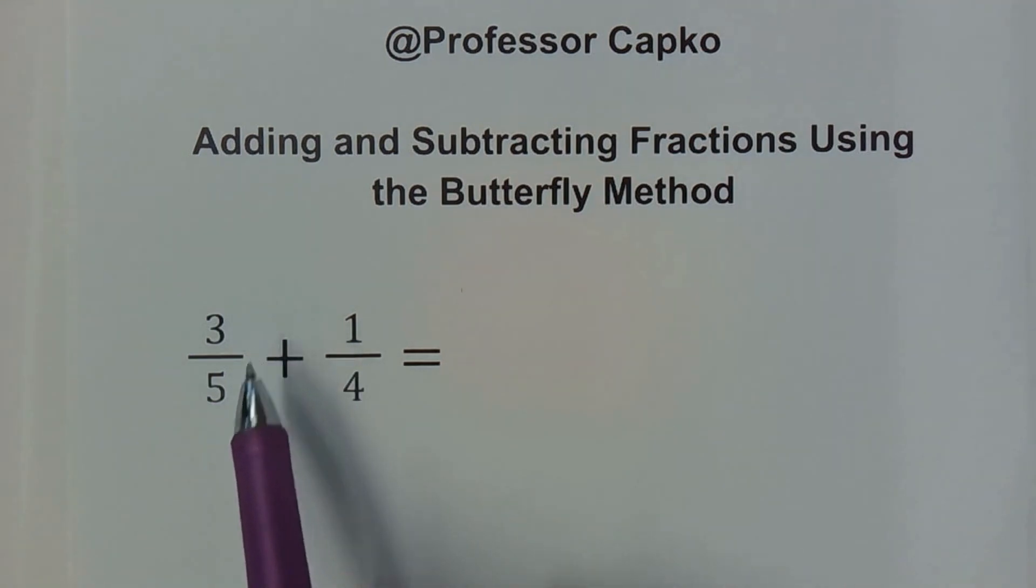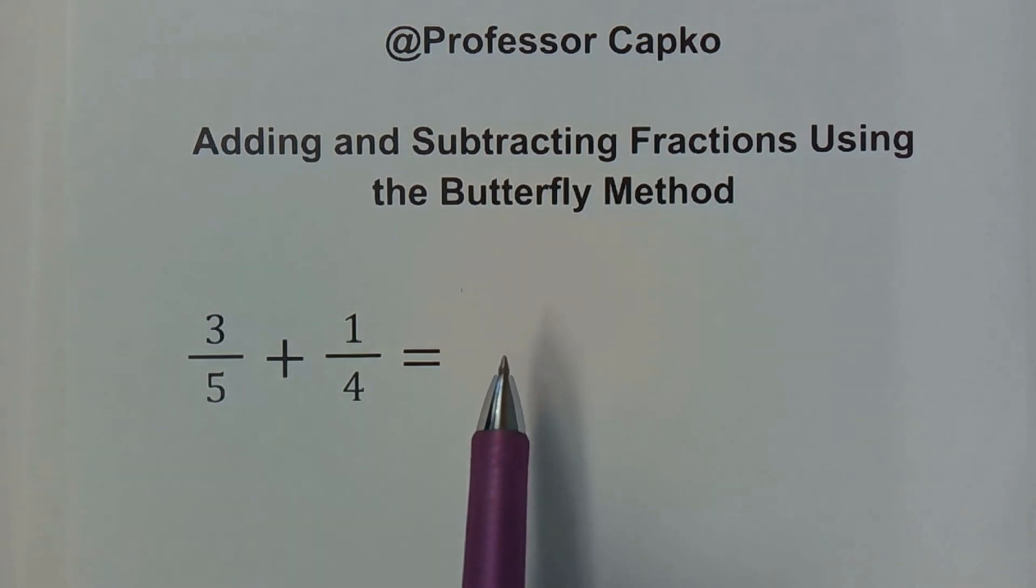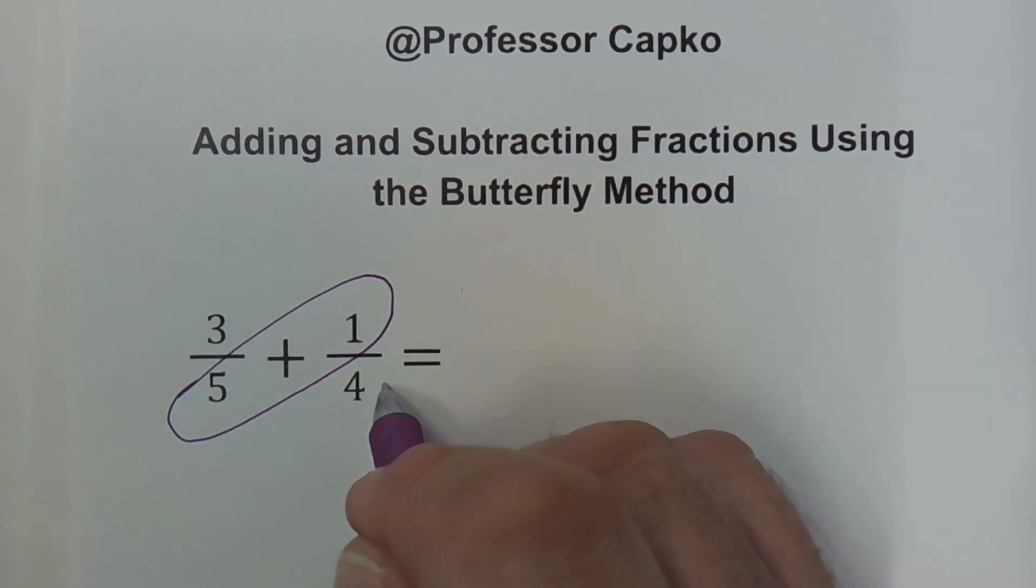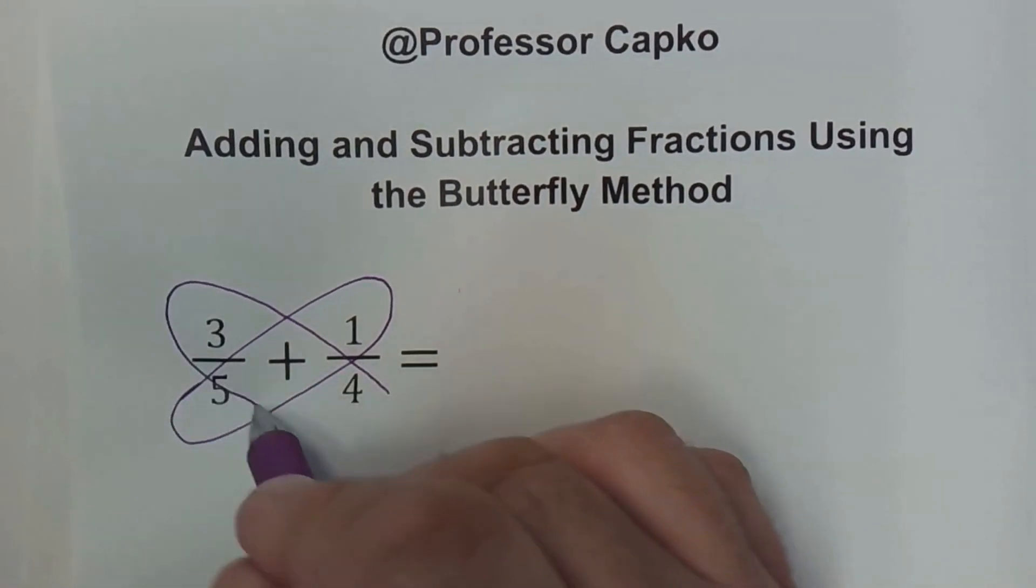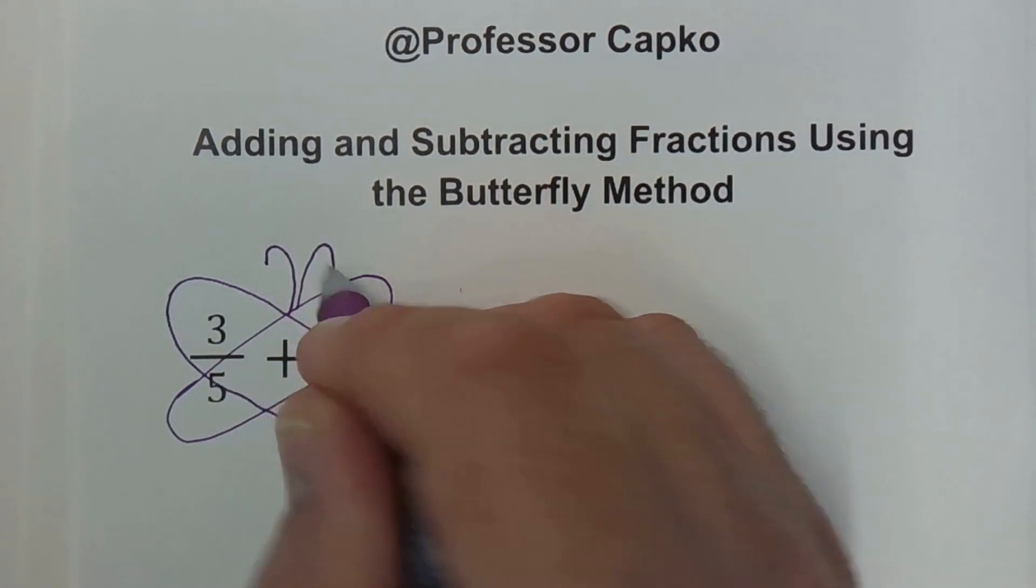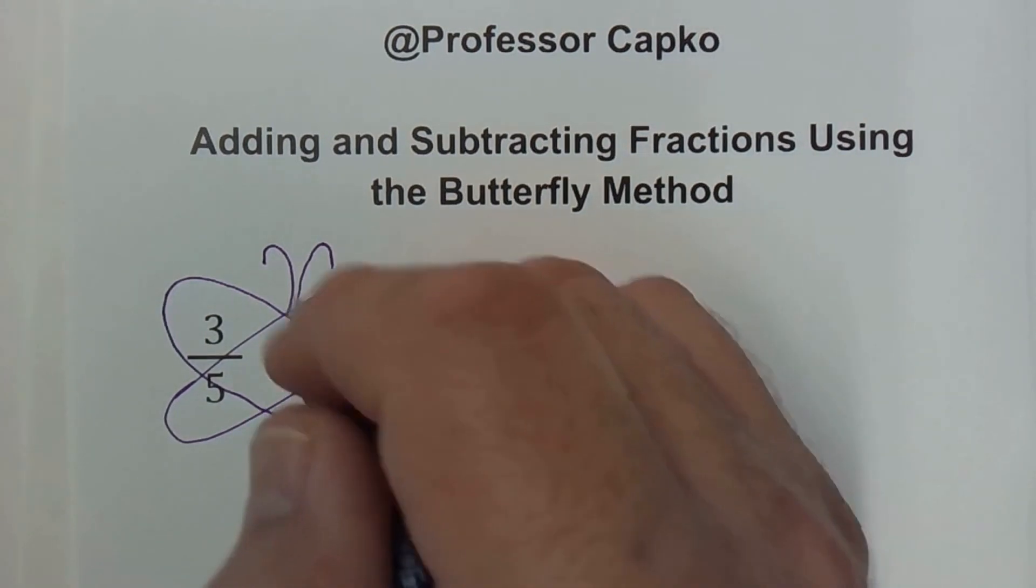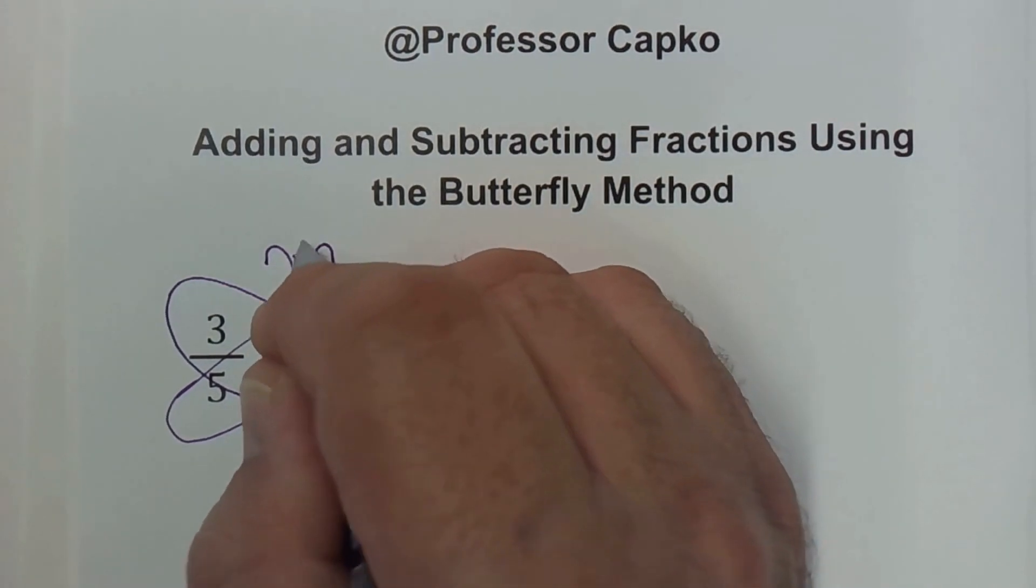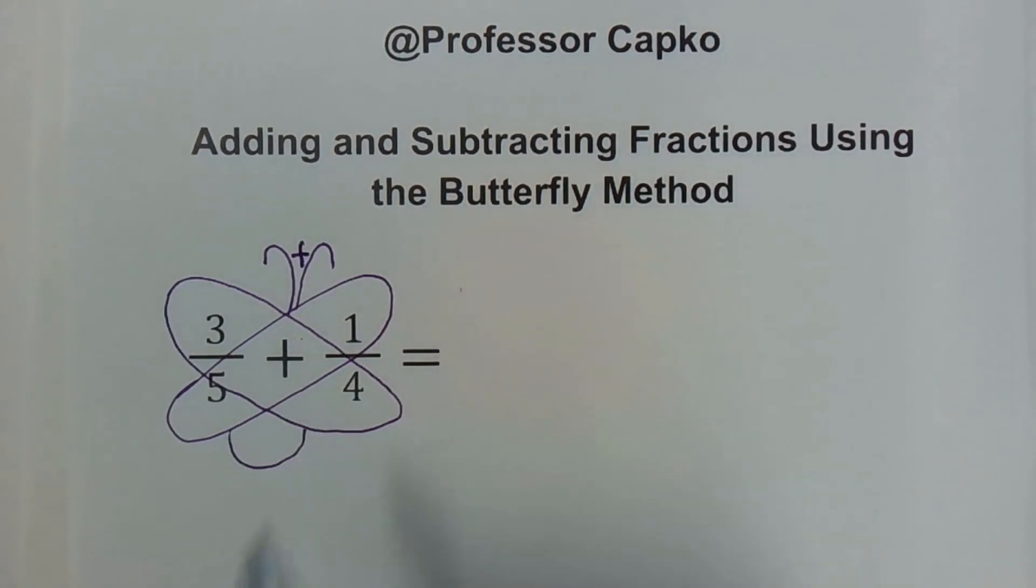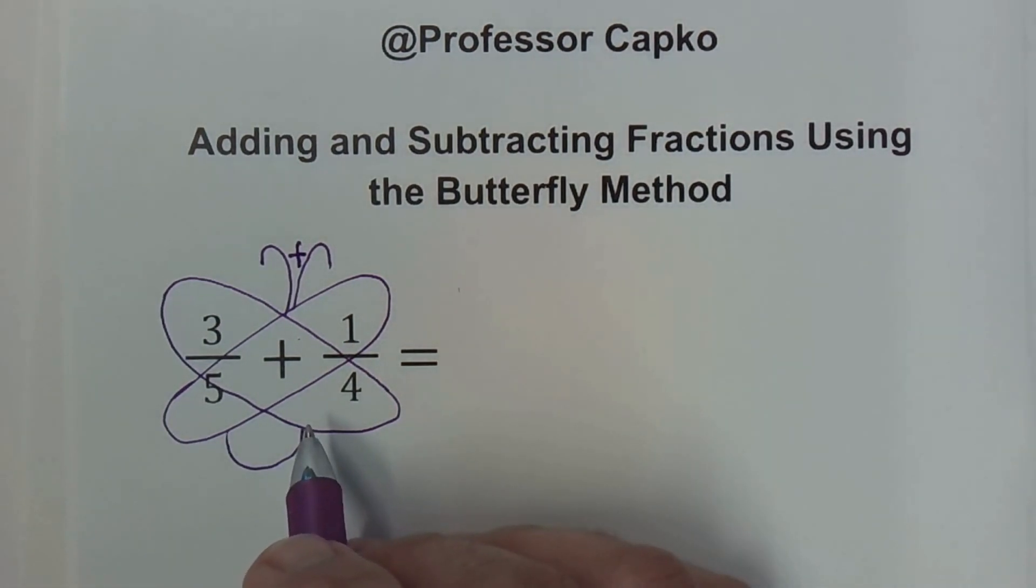So we're going to add three-fifths. We're going to add to it one-quarter. And to do this method, the way that I like to do it is first you draw the butterfly. So we've got a nice wing here and a nice wing like that. The butterfly has some antennae, and I'm going to take whatever the sign is between them and I'm going to put it between the antennae like that. And we have a body down here for the rest of the butterfly. Alright, so I've drawn the butterfly, so now it's time to do the butterfly method.